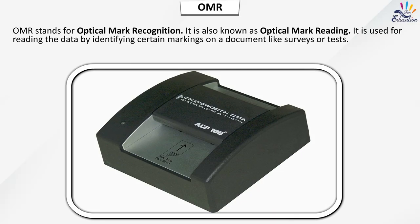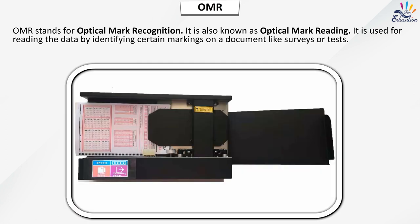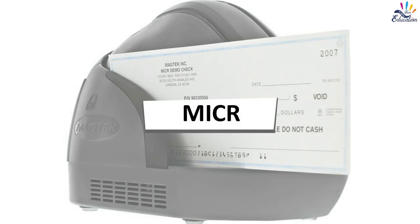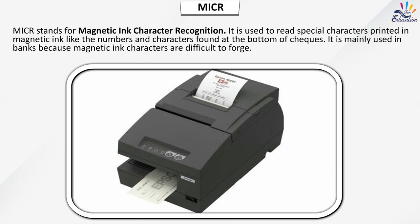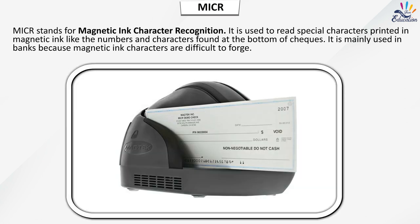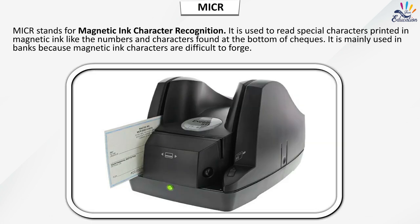OMR stands for Optical Mark Recognition, also known as Optical Mark Reading. It is used for reading data by identifying certain markings on a document like surveys or tests. MICR stands for Magnetic Ink Character Recognition. It is used to read special characters printed in magnetic ink, like the numbers and characters found at the bottom of checks. It is mainly used in banks because magnetic ink characters are difficult to forge.